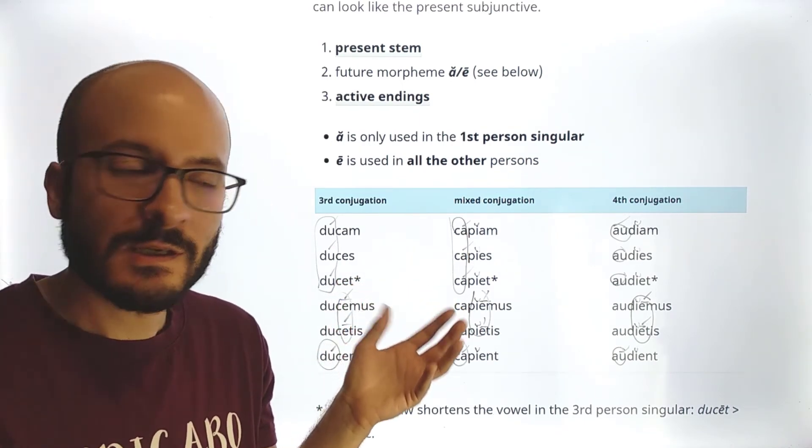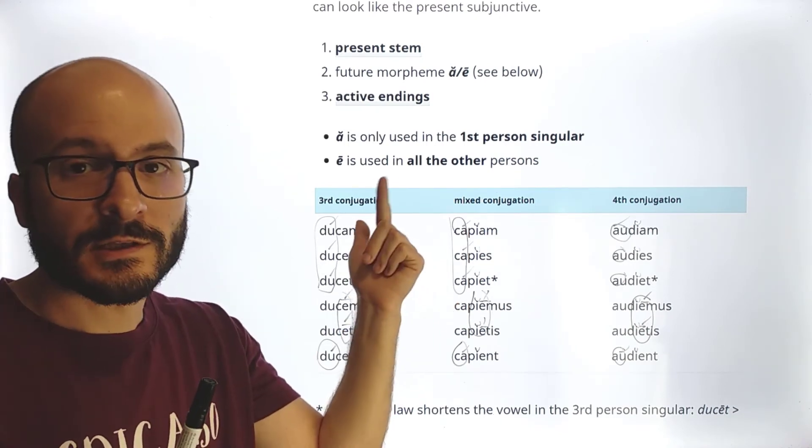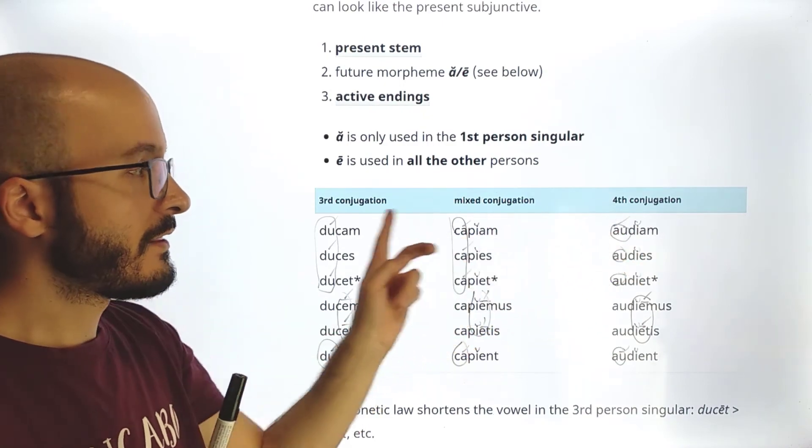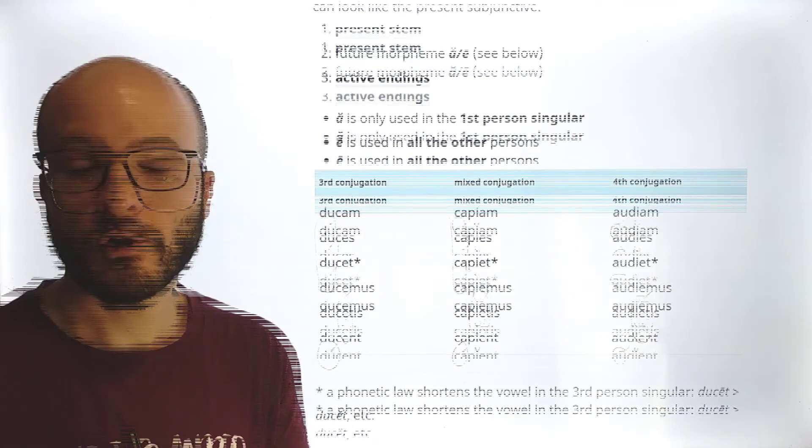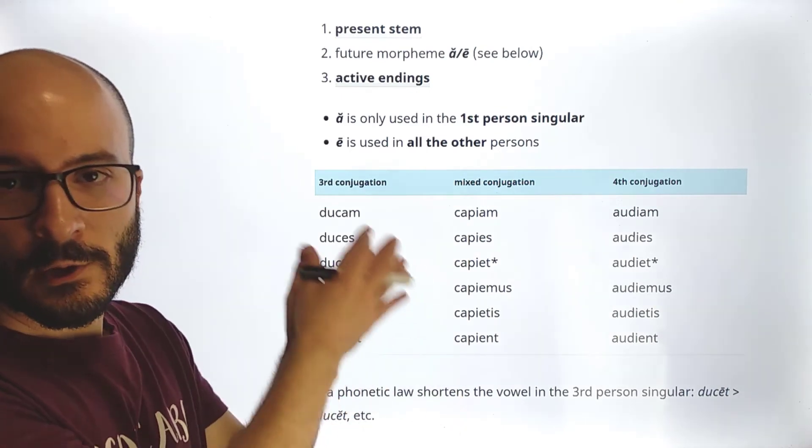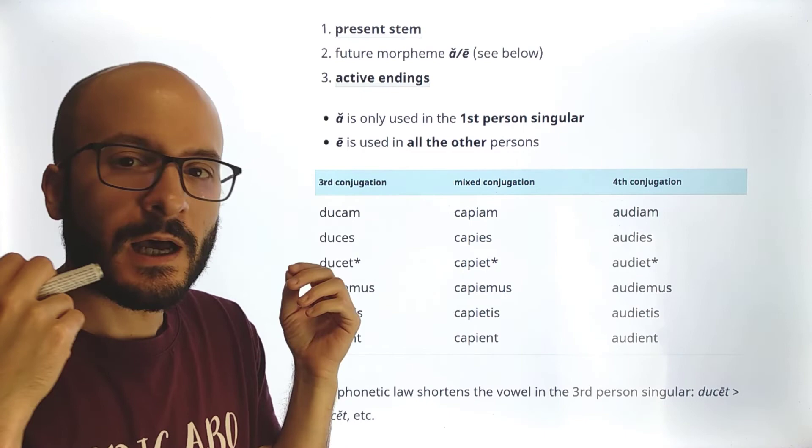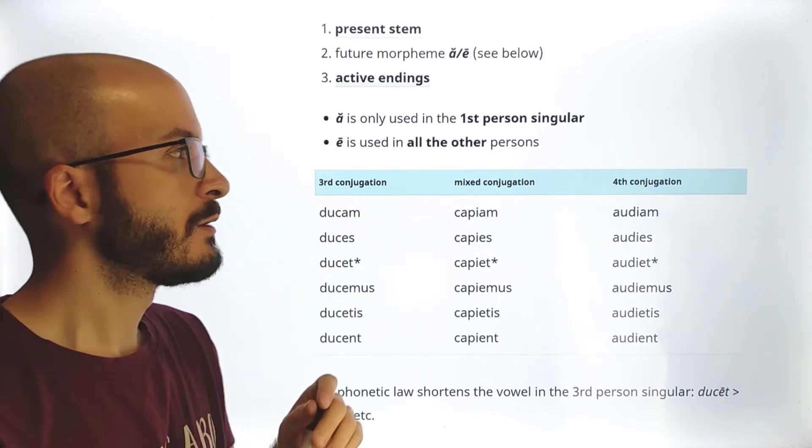We have to learn two types of future, one for the first and second conjugation and for the verb sum, and then the other type for the third mixed and fourth conjugation. And of course, I haven't even written it here in the lesson because it's quite obvious, but I am saying now with my voice, with my mouth, my tongue.